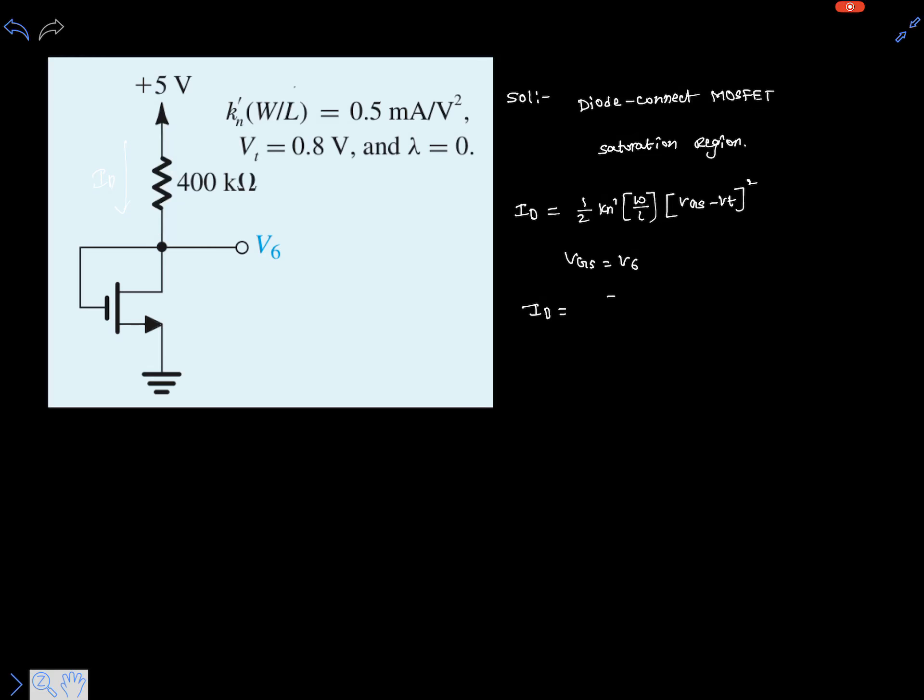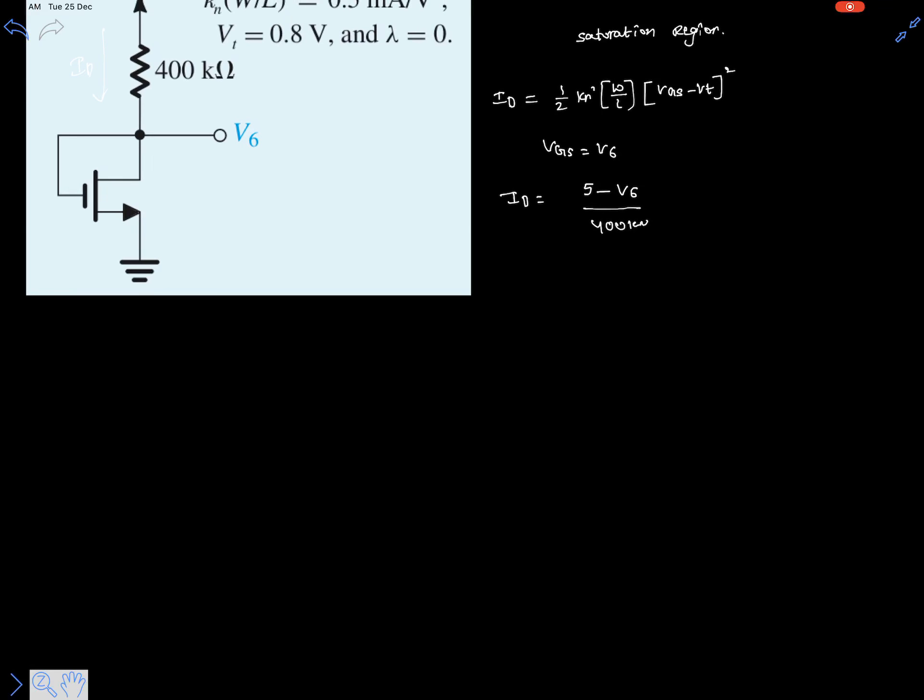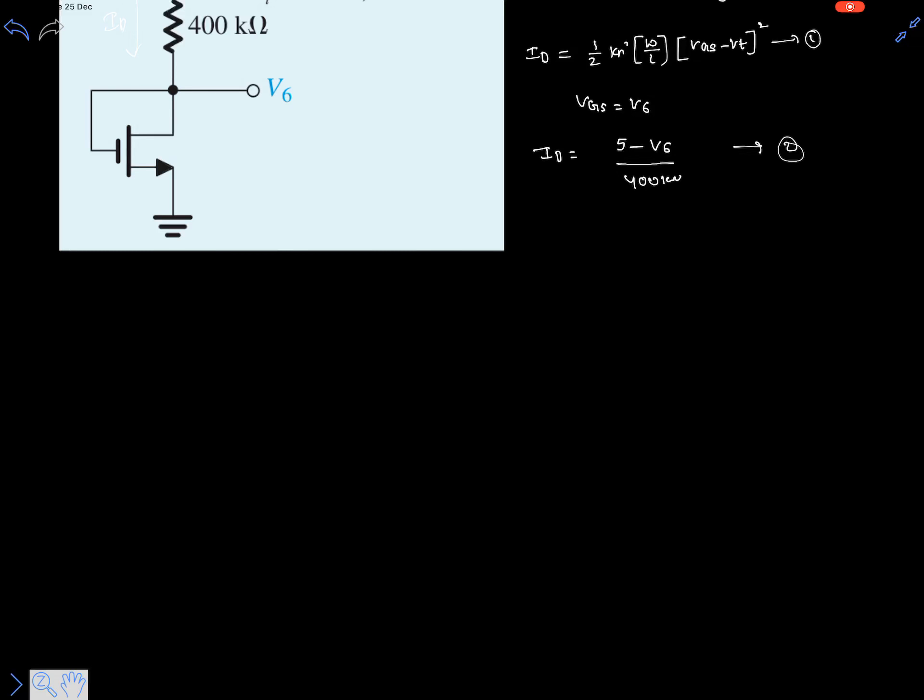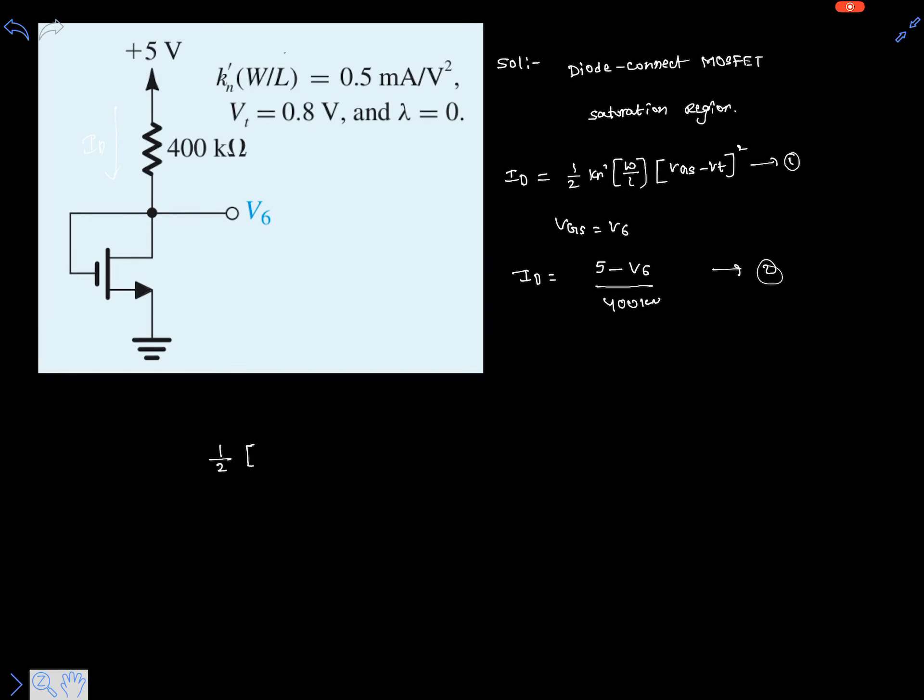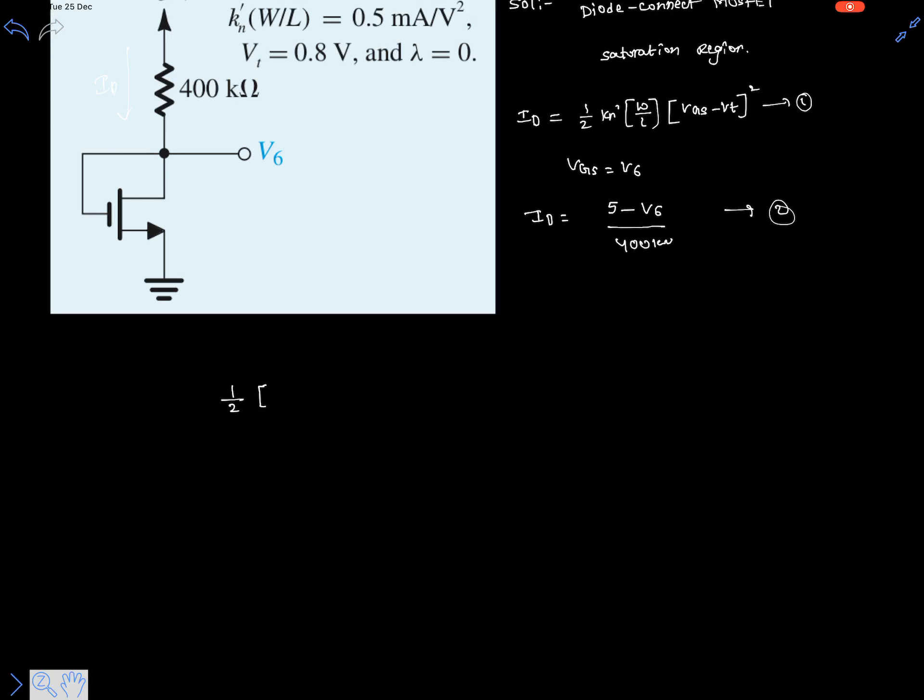At the same time, we can write one more equation for drain current, that is 5 minus V6 over 400 kilo-ohm resistance. Let's equate both equations, equation 1 and equation 2.